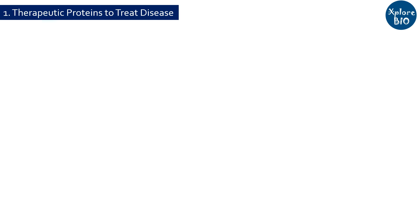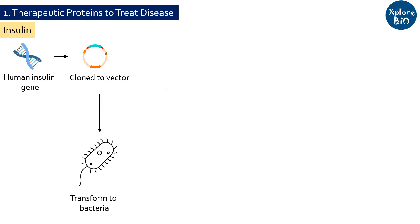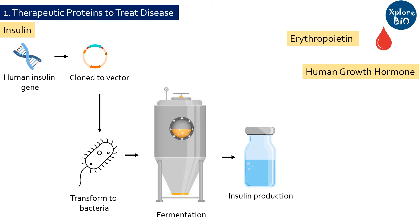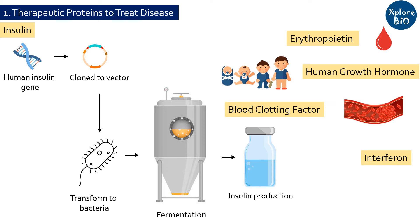One of the most impactful applications of Recombinant DNA technology is in the production of life-saving therapeutic proteins like insulin. Recombinant DNA technology allows scientists to insert the human insulin gene into bacteria, which can then produce large amounts of human insulin in a cost-effective way. This insulin is routinely used by many diabetics, increasing their life expectancy. Other therapeutic proteins include erythropoietin to manage anemia, human growth hormone for treating growth disorders in children, blood clotting factor for haemophilia patients, and interferons with anti-cancer and antiviral properties.